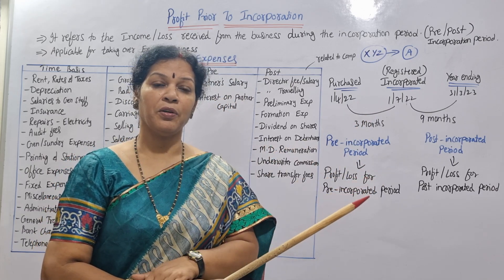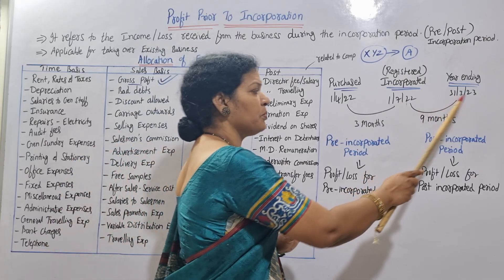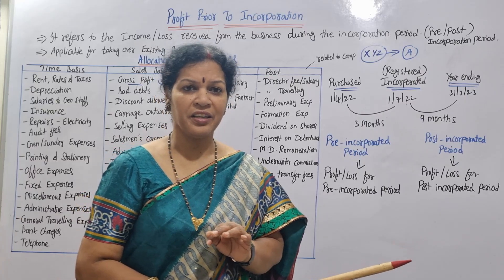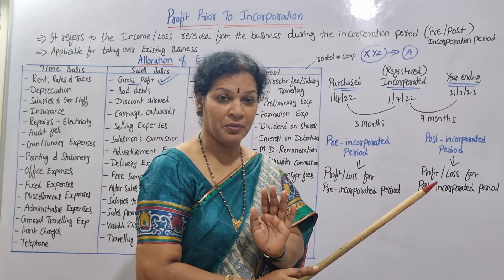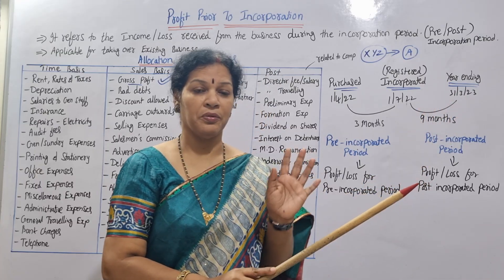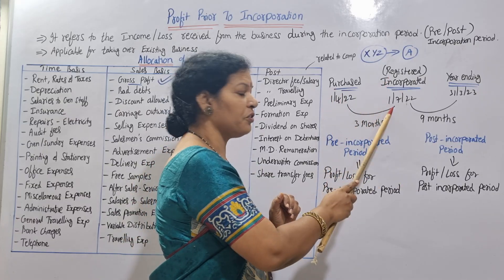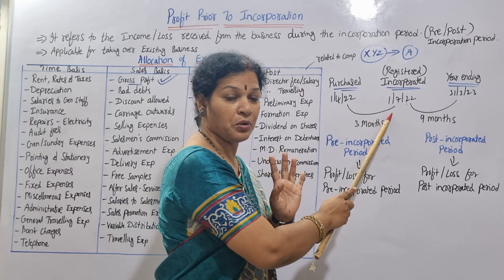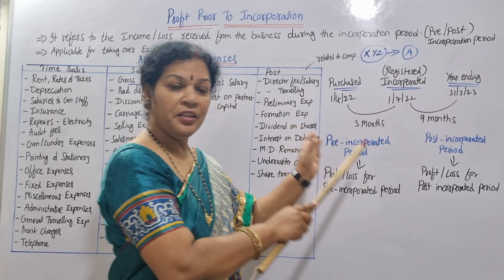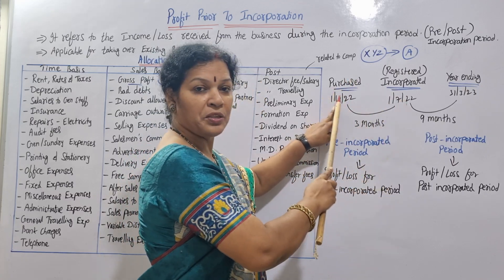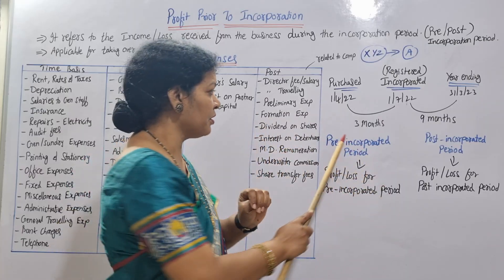For example, the financial year ending is 31st March 2023. We have the registration of the company on 1st July. We purchased the company on 1st April, and incorporation happened on 1st July. The period from purchase to incorporation — April, May, June — is three months. This is the pre-incorporated period.